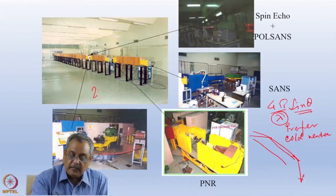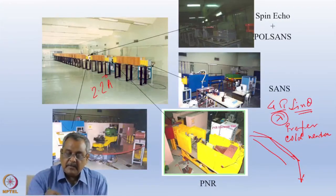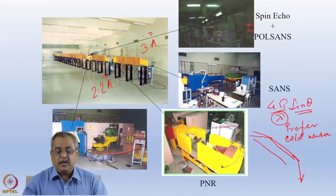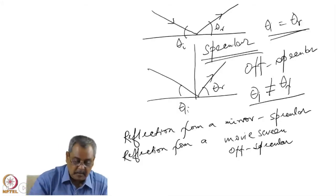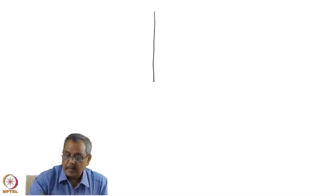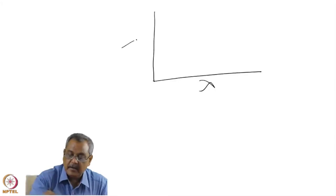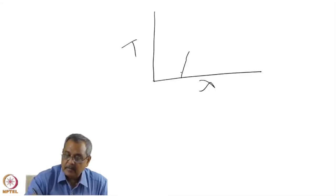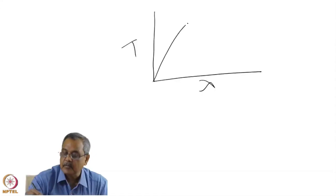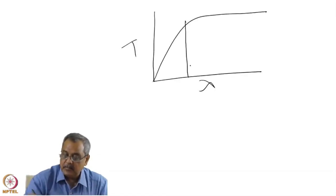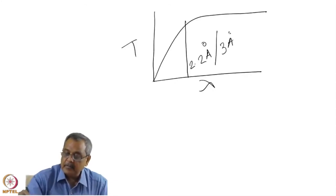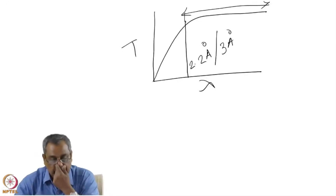One guide has a critical wavelength of 2.2 Å and there is a guide on the other side with a critical wavelength of 3 Å. The transmission of a curved guide depends on lambda, going up above the critical wavelength. So it is better to do experiments using neutrons in this range using the guide halls.